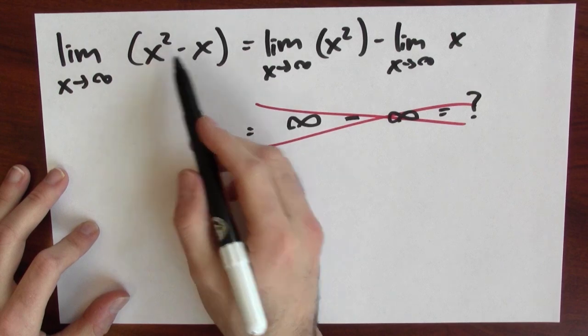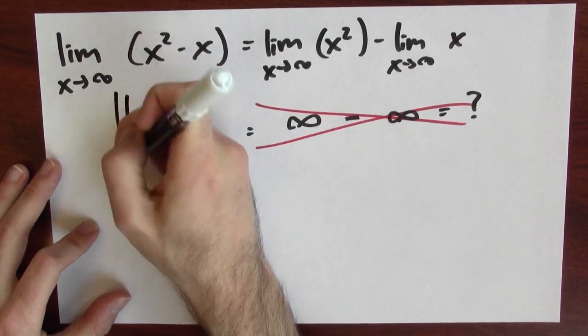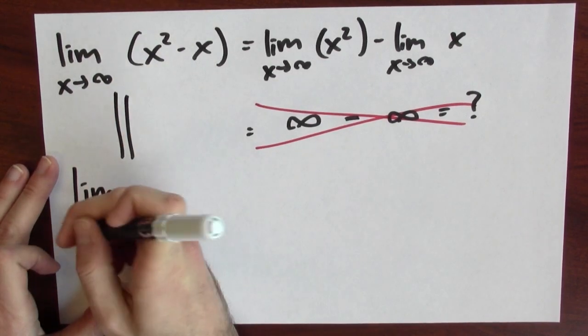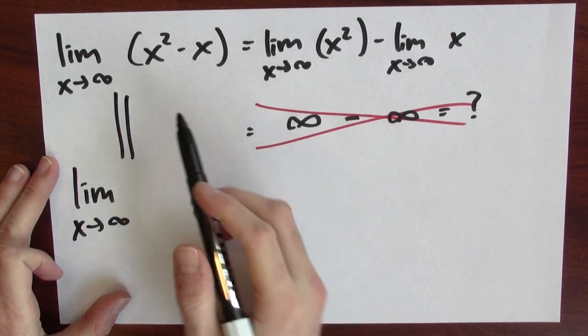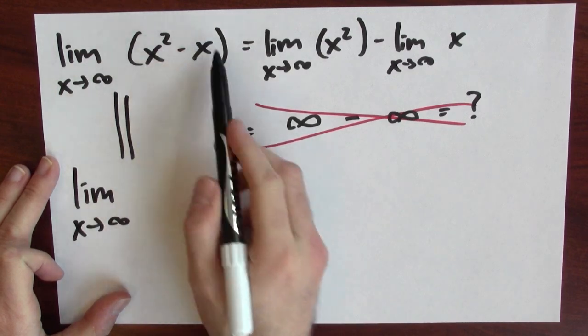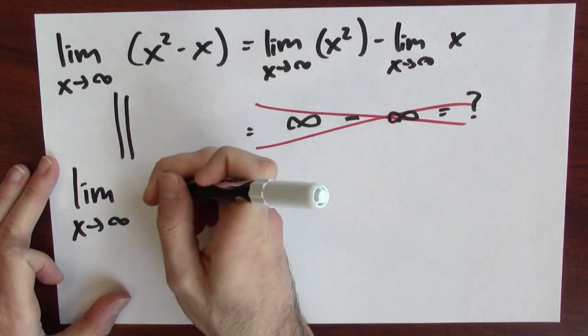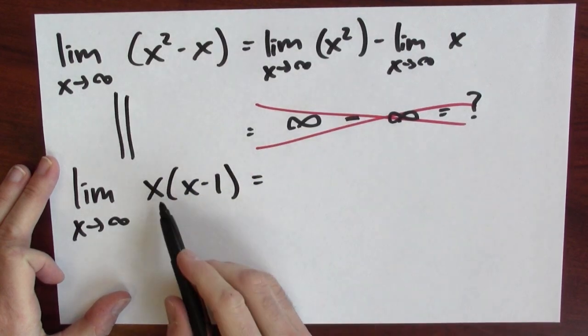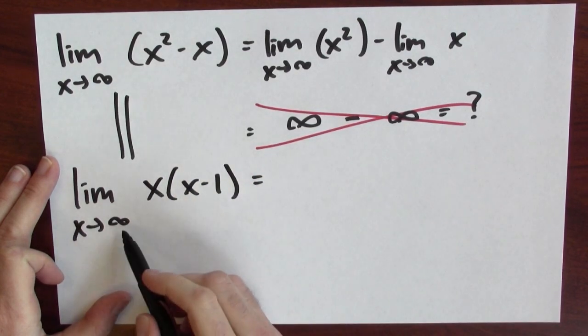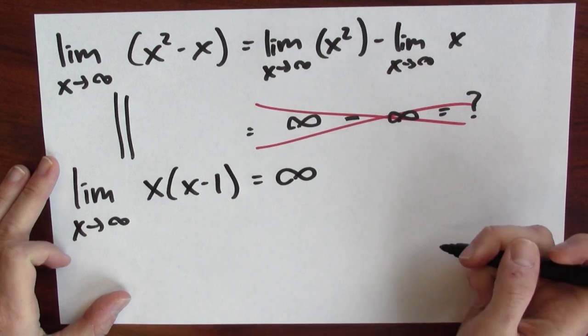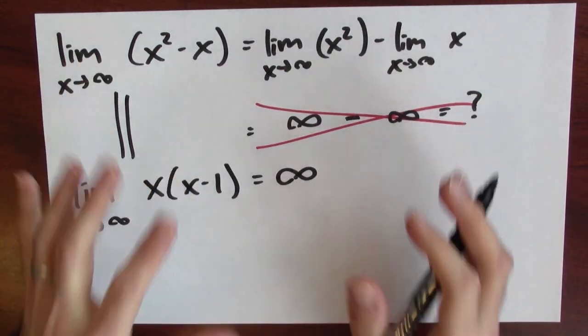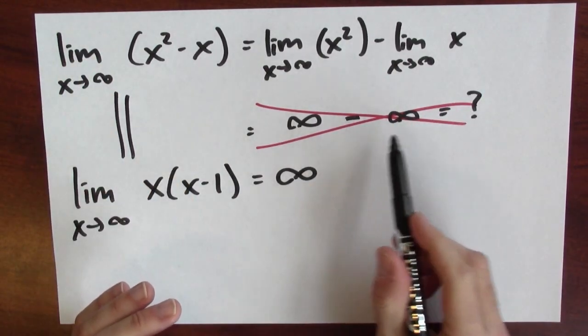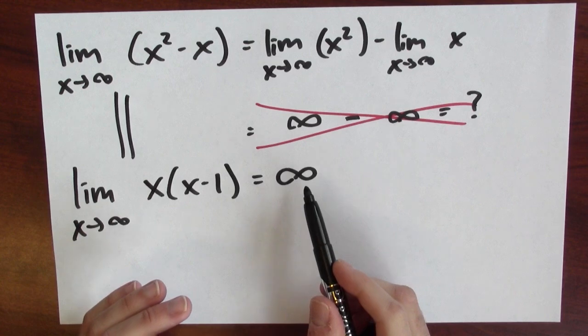Instead, if I want the limit of x squared minus x as x approaches infinity, I can rewrite it as the limit as x goes to infinity of x times (x minus 1). And we just saw that the limit of x(x−1) as x approaches infinity equals infinity. So in this case, infinity minus infinity turns out to be infinity.